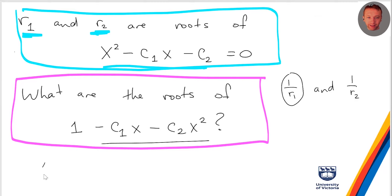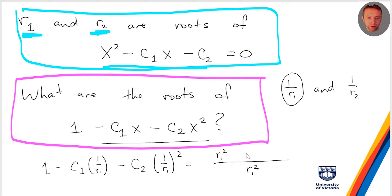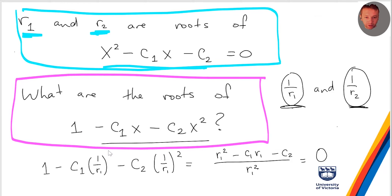To verify: plug in 1/r1. We get 1 minus c1·(1/r1) minus c2·(1/r1)². Put everything over the denominator r1²: that gives (r1² minus c1·r1 minus c2) all over r1². The numerator is exactly the characteristic polynomial evaluated at r1, which is 0 since r1 is a root. So 1/r1 is indeed a root, and similarly 1/r2 is a root of the denominator polynomial.